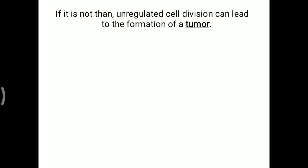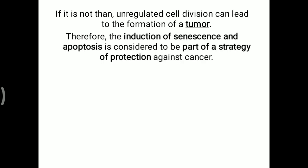Basically, the cell or organism tries to keep that cell but does not allow it to replicate. If this cell with damaged DNA is allowed to grow, unregulated cell division can lead to the formation of a tumor. To prevent tumor formation, the ability of the cell to grow is stopped, and it remains in a senescence phase.